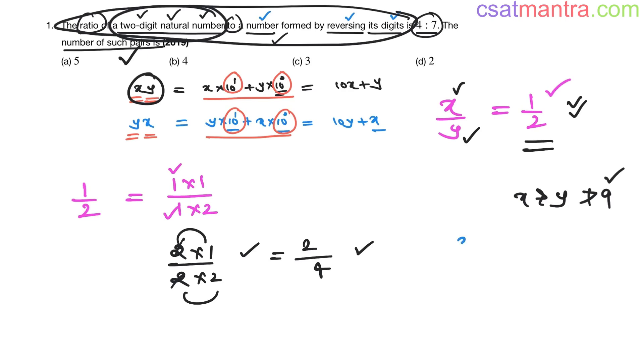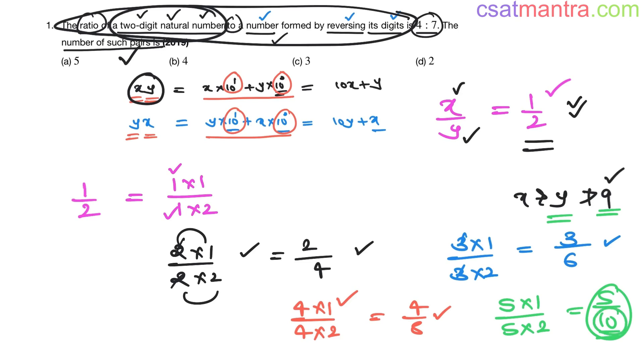Now let us multiply the numerator with 3 and denominator with 3. The ratio is 1 by 2 because 3, 3 gets cancelled. This is 3 by 6. This is also one possibility. Now let us multiply the numerator with 4 and denominator with 4. This is 4 by 8. The ratio is 1 by 2. This is also one possibility. Now let us multiply the numerator with 5 and denominator with 5. This is 5 by 10. See, 2 digit. But y cannot be greater than 9, right?